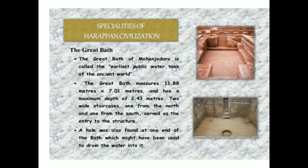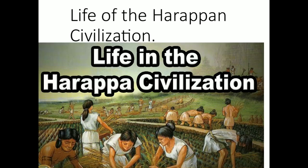The Great Bath: The Great Bath at Mohenjo-daro is called the earliest public water tank. You can see it in the slide. The Great Bath measured 11.88 meters by 7.01 meters and has a maximum depth of 2.43 meters. Wide staircases, one from the north and one from the south, served as the entry structure. A hole was also found at the end of the bath, which may have been used to drain water.